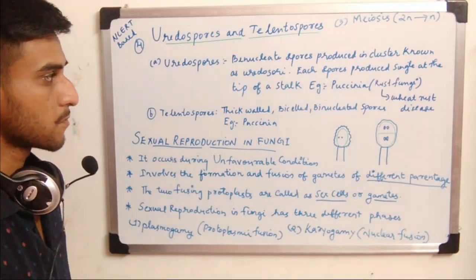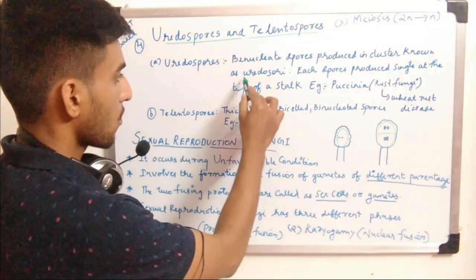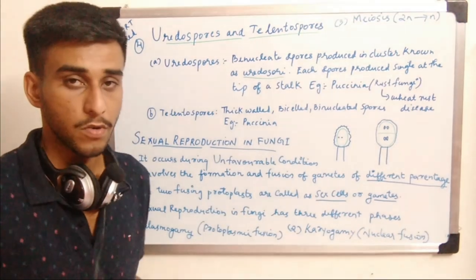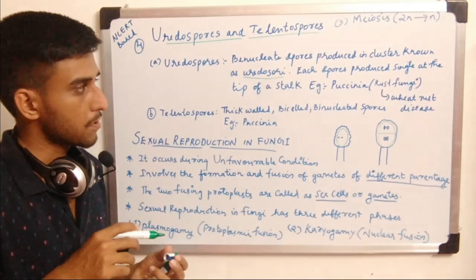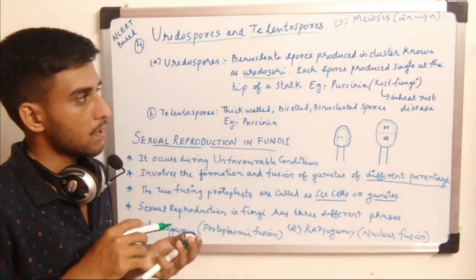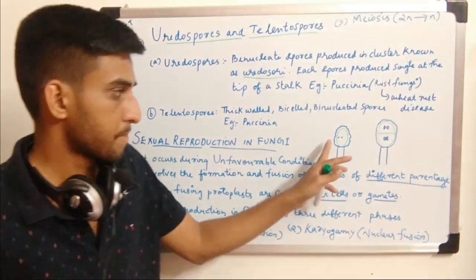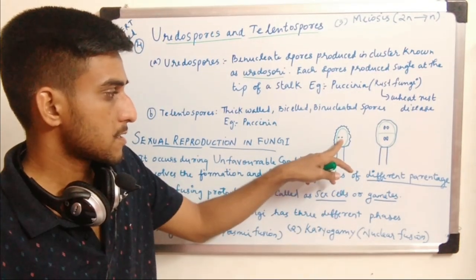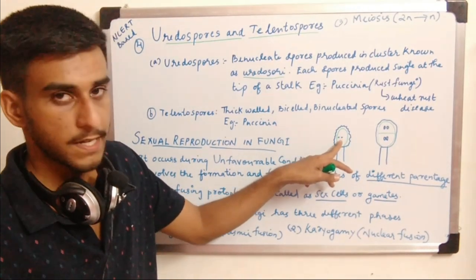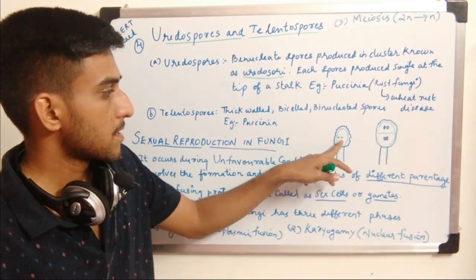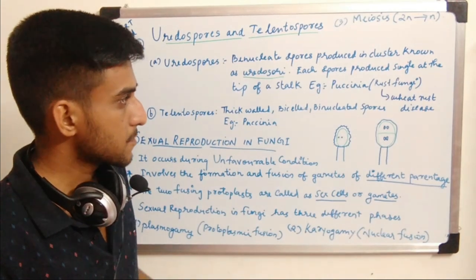Uredospores are binucleate spores produced in clusters known as uredosori. Each spore is produced singly at the tip of the stock. The uredospore is a binucleate spore — meaning it contains two nuclei per spore. If formed in a cluster it is known as uredosori.